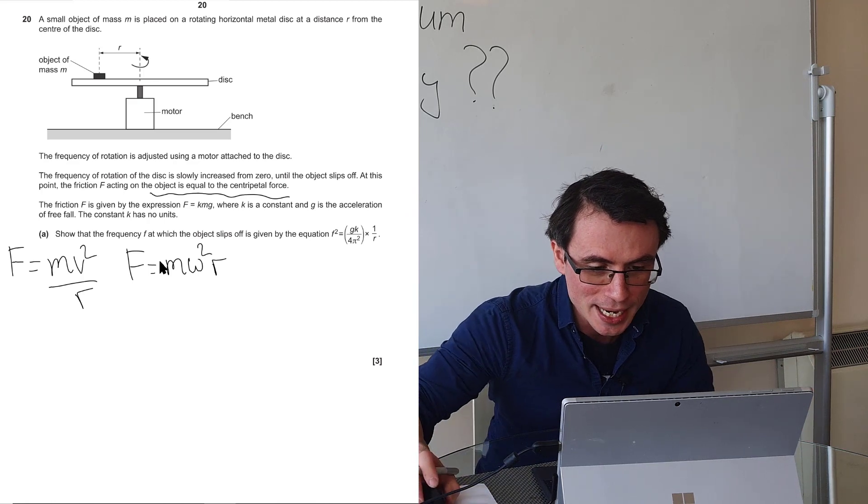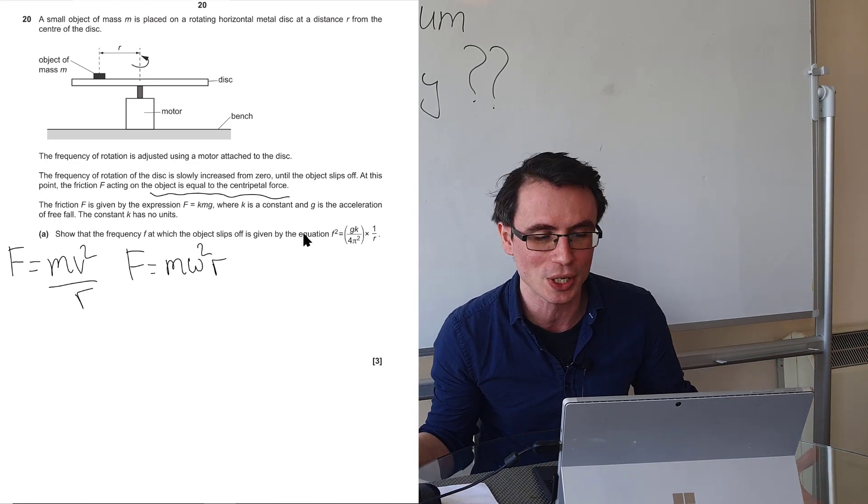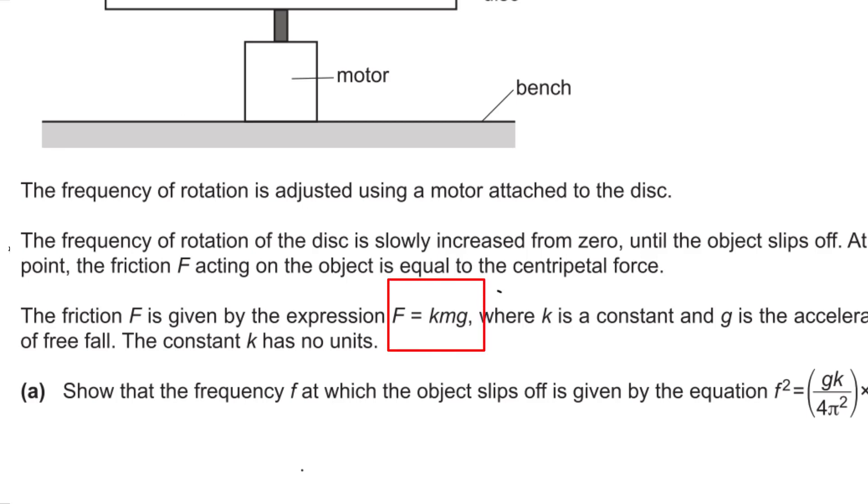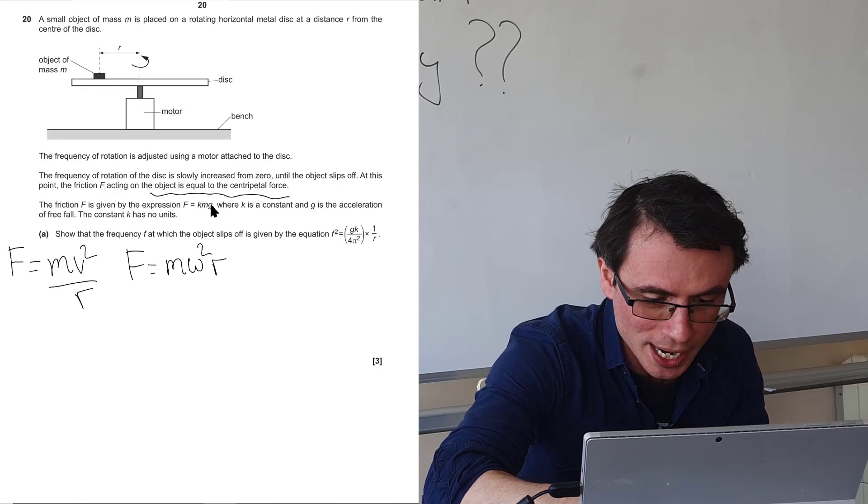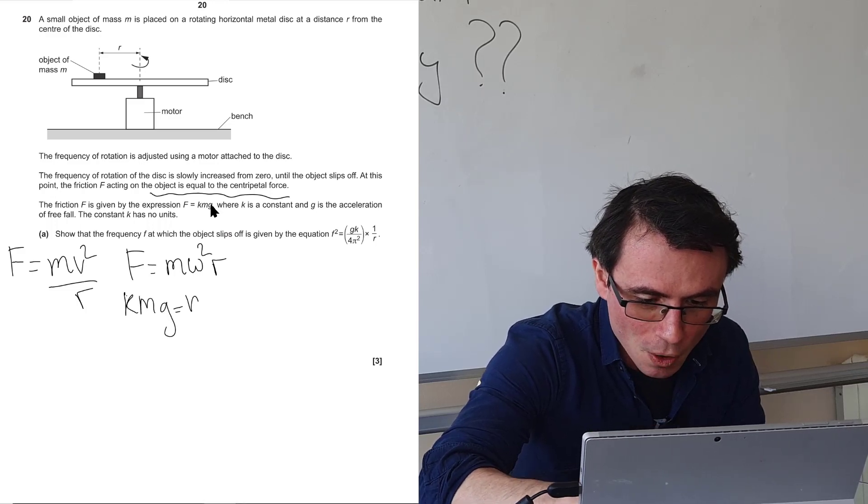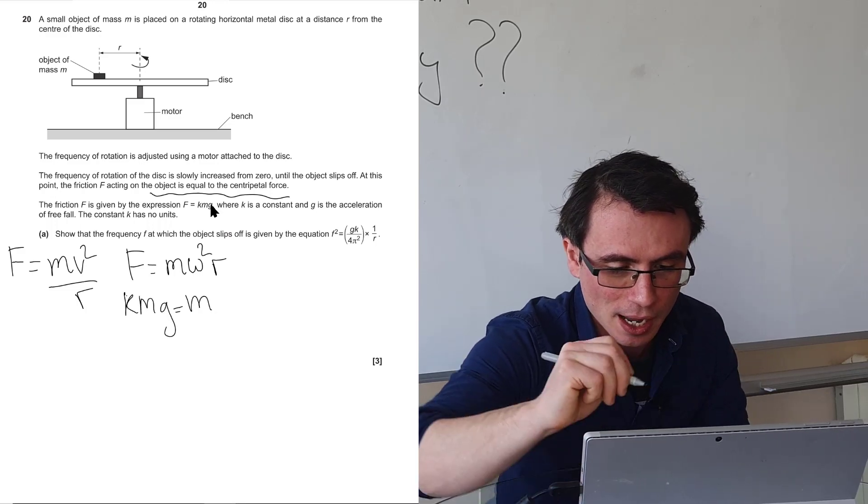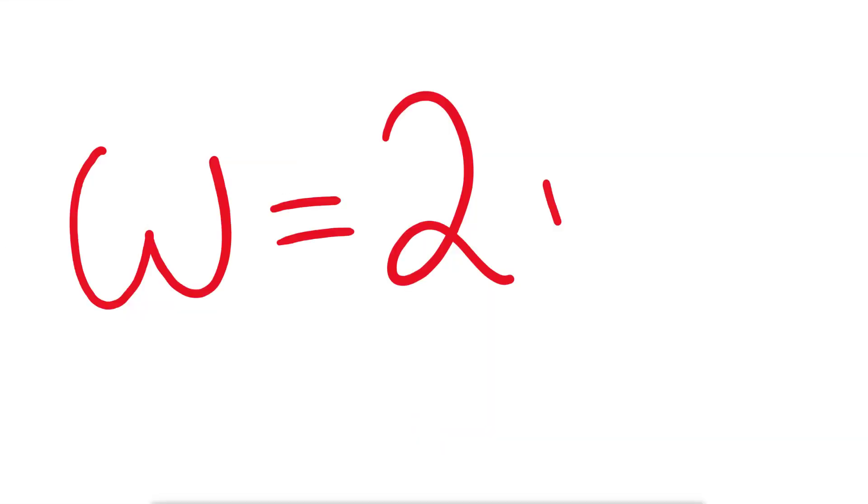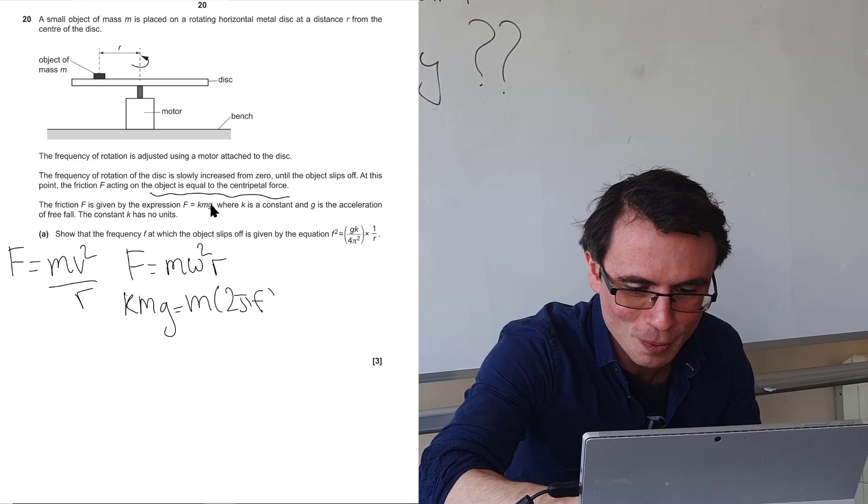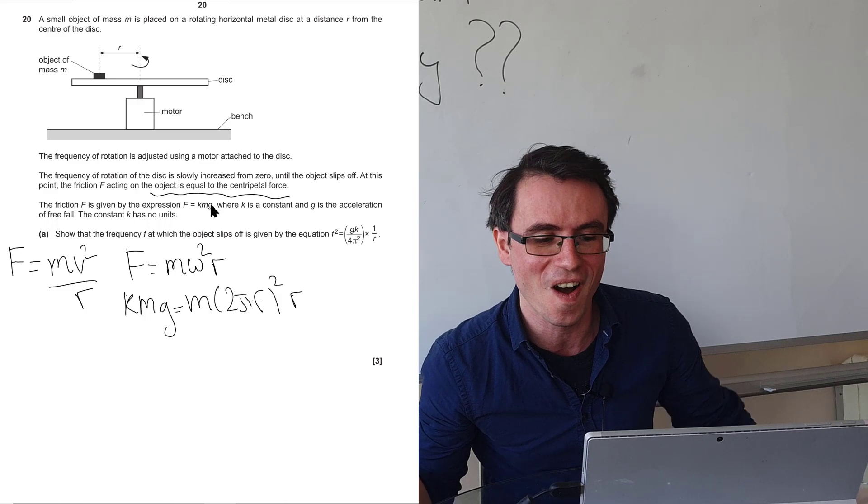What we need to do is rearrange essentially for the frequency. We know that the force f is equal to kmg. So I can just say that this is equal to kmg is equal to m omega squared times r. Now I know that omega is equal to 2 pi f. So I can just write brackets 2 pi f squared times r.